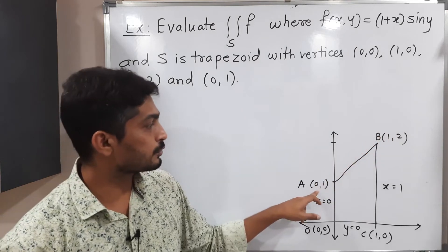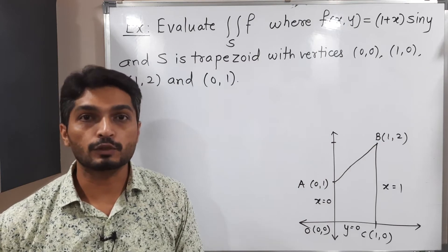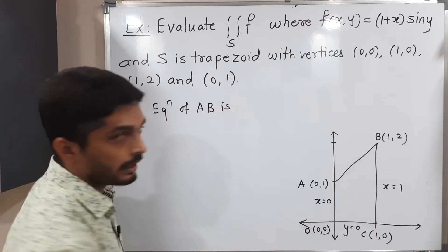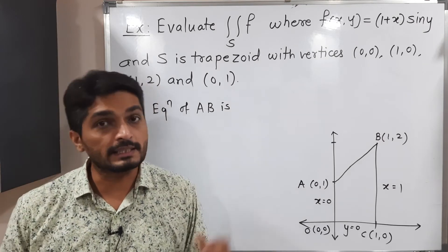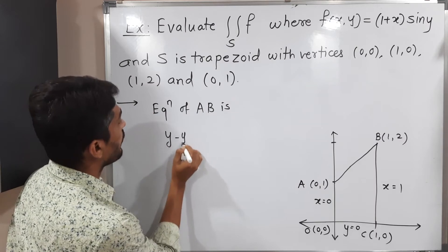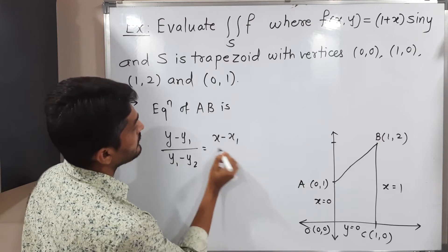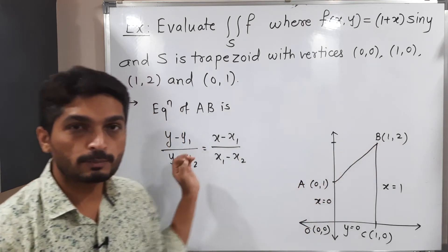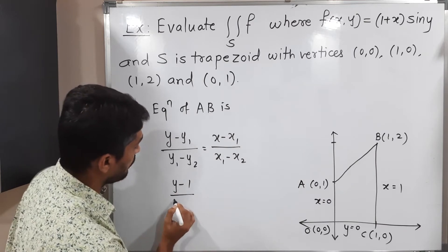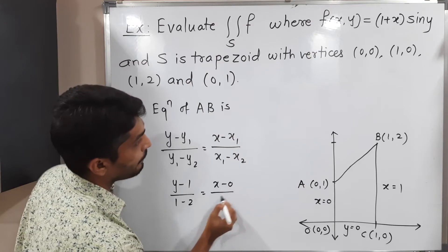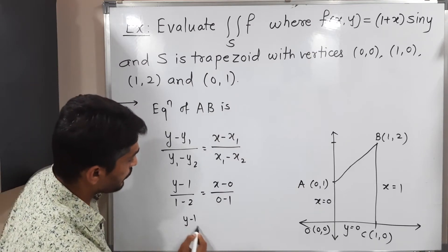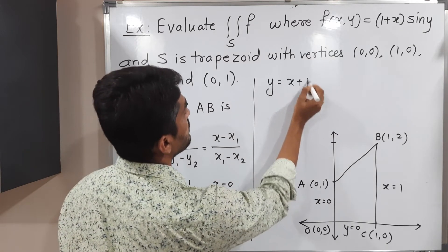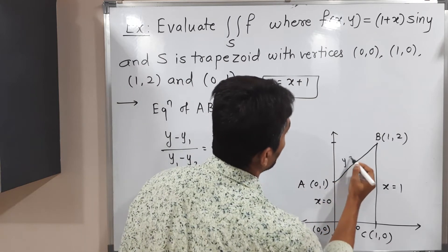AB is a line which passes through (0,1) and (1,2). We find the equation of line AB using the two-point formula: (y − y₁)/(y₁ − y₂) = (x − x₁)/(x₁ − x₂). Substituting: (y − 1)/(1 − 2) = (x − 0)/(0 − 1), which gives (y − 1)/(−1) = x/(−1). Simplifying, y = x + 1. So the equation of line AB is y = x + 1.